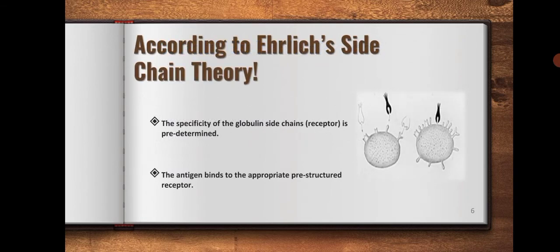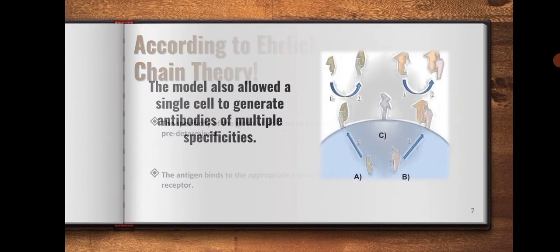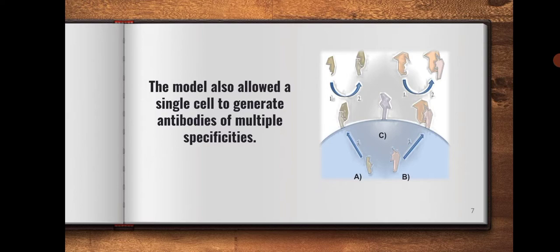According to Ehrlich's sidechain theory, the specificity of the globulin sidechain, i.e. receptor, is predetermined. The antigen binds to the appropriate pre-structured receptor. The model also allowed a single cell to generate antibodies of multiple specificities.